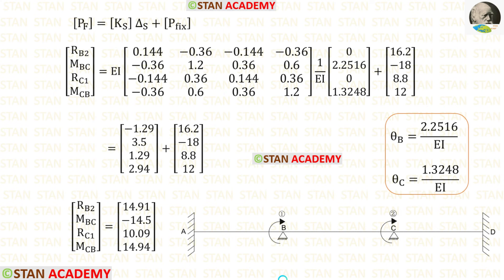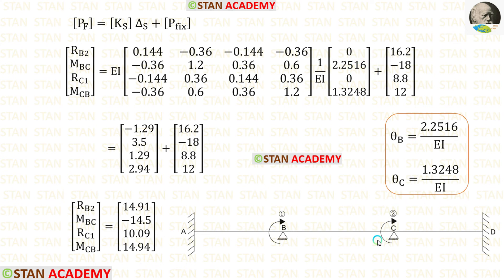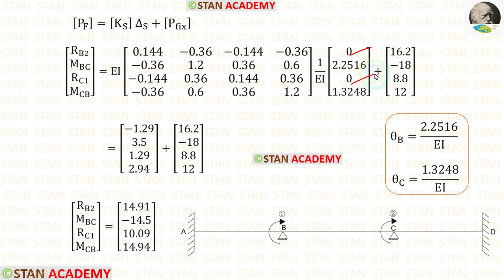Now let us find the final moments and reactions in span BC. We apply the element stiffness matrix for span BC. In span BC there are two coordinates at points B and C. At point B we have moment MBC, for which we apply θB, and at point C we apply θC. Entering 0 for other values and adding the fixed end reactions and moments, we get the final reactions and moments in span BC.